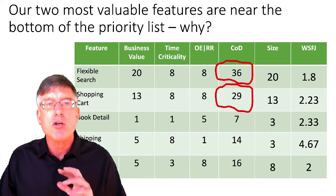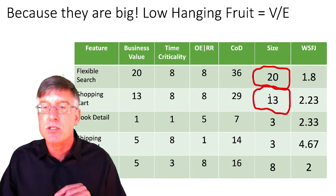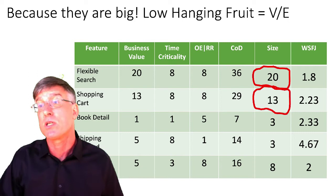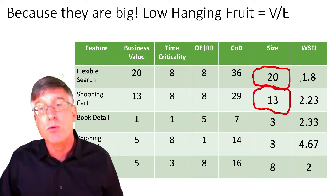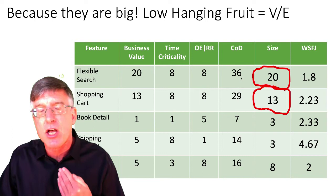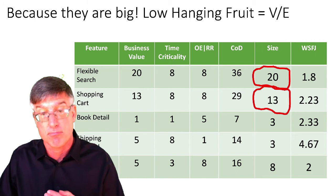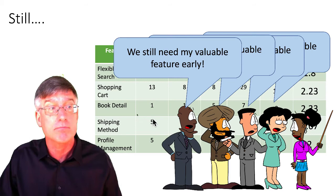Look at why this is really happening. Our two most valuable features are near the bottom of the priority list because they're big — they're huge — and that is what is causing the problem. Flexible search does give us 36 units of value in cost of delay, but because it's so big, it goes right down to the bottom. You saw in part one of this video series the disadvantaged economic outcome you're going to get if you decide to do it anyway. Shipping method becomes our best choice because it's a fairly small item.